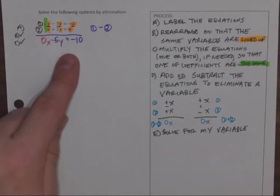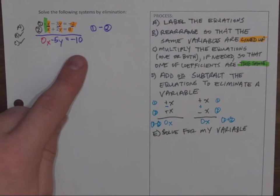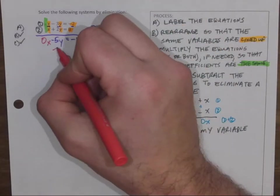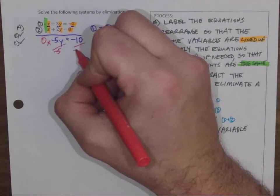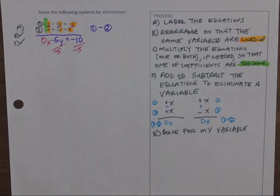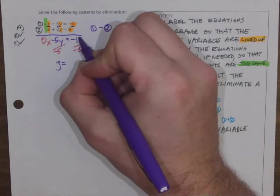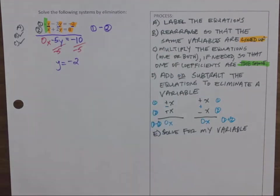So as I continue with math, negative 5Y equals negative 10. Divide by negative 5, divide by negative 5, to isolate and solve for my variable. Negative 10 divided by negative 5 is positive 2.